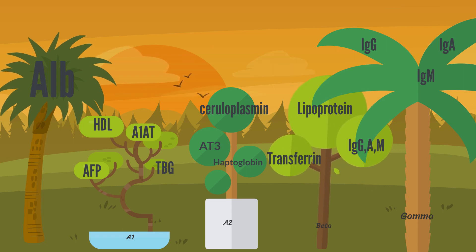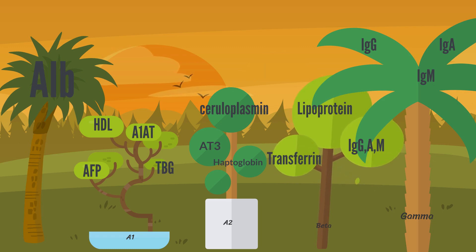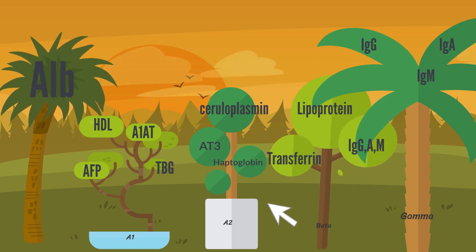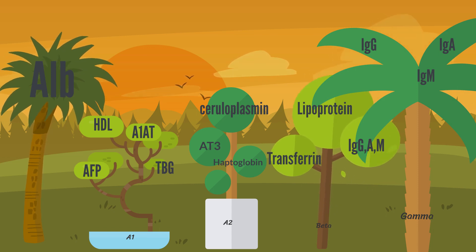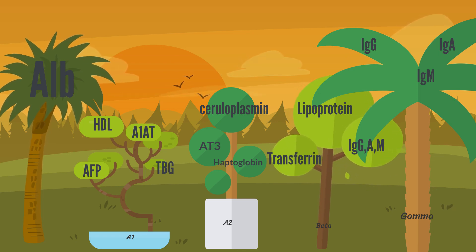The alpha-1 tree has many different branches, such as the alpha-fetoprotein branch, the HDL branch, the alpha-1 antitrypsin branch, and the thyroglobulin branch. The alpha-2 tree has branches such as antithrombin-3, haptoglobin, and ceruloplasmin. The beta tree has branches such as transferrin, lipoprotein, and immunoglobulin branches. And the gamma tree comprises IgG, IgM, and IgA branches.